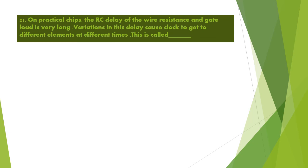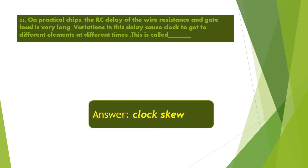Next question: On practical chips, the RC delay of wire resistance and gate load is very long. Variations in this delay cause the clock to reach different elements at different times. This is called clock skew.